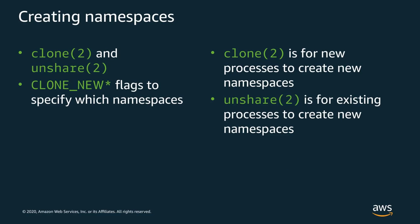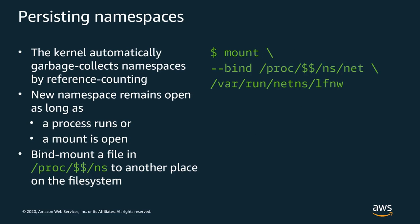Unlike cgroups, namespaces are not manipulated through a virtual file system. Instead, a set of Linux syscalls are used: clone and unshare. Clone is a syscall for creating processes, and as part of its functionality it can start the new process in a new namespace, controlled by flags starting with CLONE_NEW. Unshare is a syscall that a running process can use to move itself into a new namespace. Namespaces can't be empty — something must be inside the namespace for it to exist. Namespaces automatically close when nothing holds them open: either a running process or a bind mount keeps them alive.